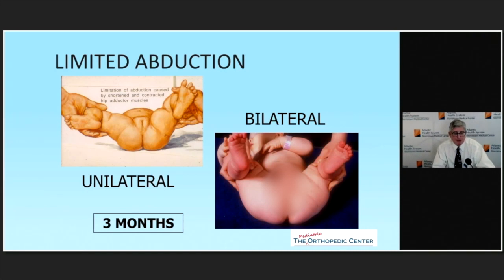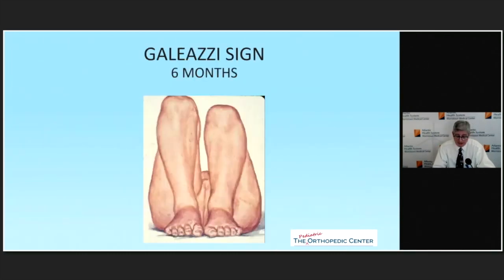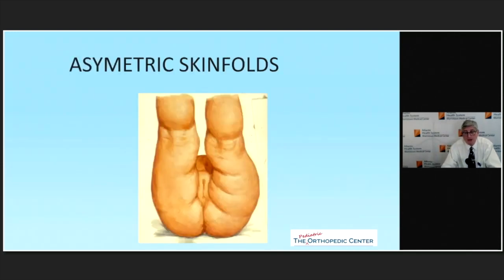If hip dysplasia is not picked up at birth, by three months of age you see hip contractures and limited abduction. Bilateral limited abduction means you may have missed a bilateral hip dislocation. The Galeazzi sign shows one tibia appearing shorter than the other — actually a misperception, since it's the dislocated femoral head making the femur appear short. Asymmetric skin folds are controversial; if the legs appear generally symmetric but skin folds are asymmetric, it likely isn't related to hip dysplasia.